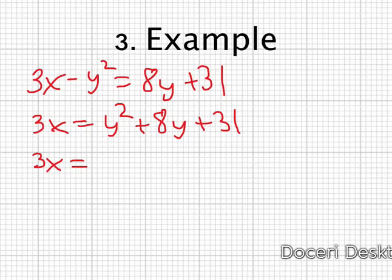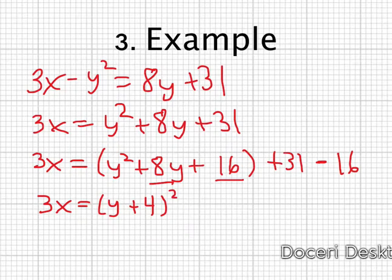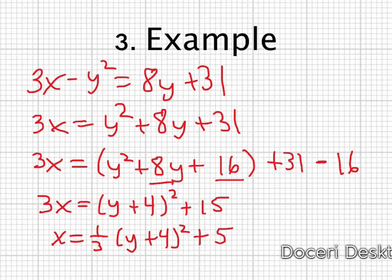So I'm going to have 3x equal to y squared plus 8y plus whatever I'm going to add plus 31. And then I have to subtract whatever I'm going to add. So 8 is my middle term. Half of 8 is 4. Square that, we get 16. So I'm going to add that here and subtract it here. Then since I have a perfect square in the parentheses, I can factor. So I get 3x equals y plus 4 squared plus 31 minus 16 is 15. Now I divide everything by 3. So I get x equal to 1 third times y plus 4 squared plus 5. So this is the standard form of my equation.